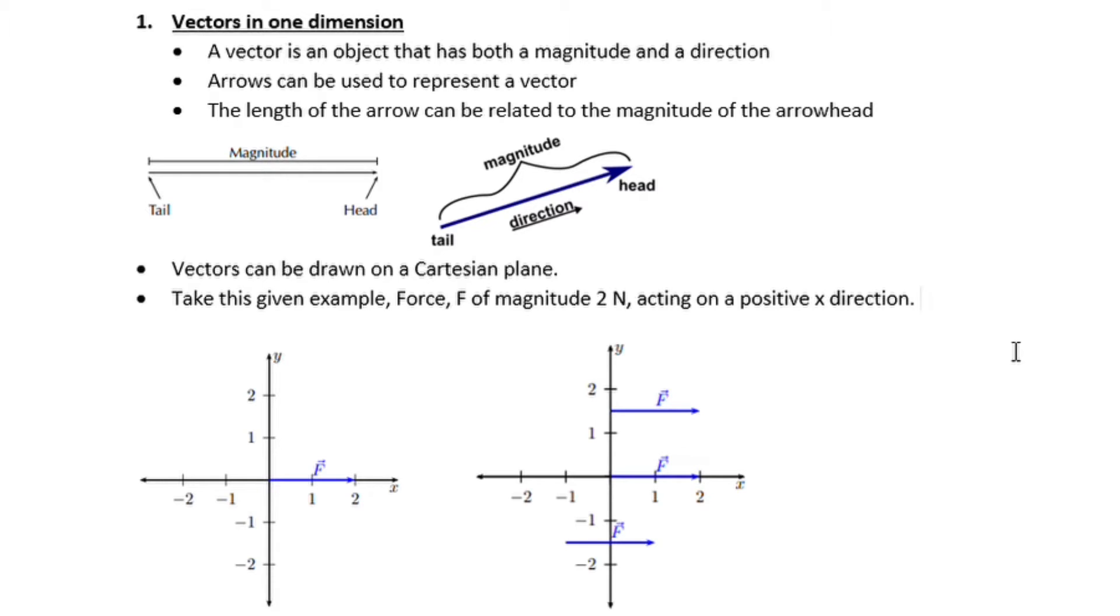An arrow can be used to represent a vector and the length of the arrow can be related to the magnitude of the arrowhead. Vectors can be drawn on a Cartesian plane.